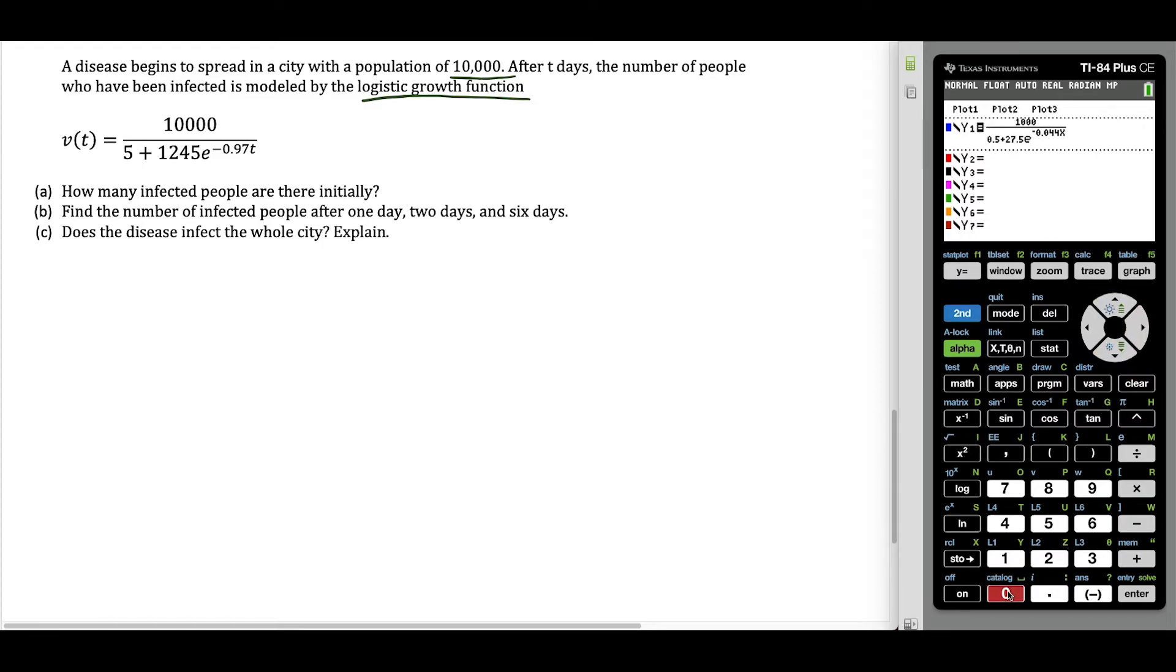All we're going to do now is just switch over and swap out the values. So we have 10,000 in the numerator here, so just make sure we have four zeros there. And now we have just five plus and we have 1245. I'll just delete all those extra pieces and our exponent is going to be negative 0.97 T. But once again, we're just going to use X. So now that just represents the equation. Now I'm going to press zoom six, and we could see that part of our graph shows up.